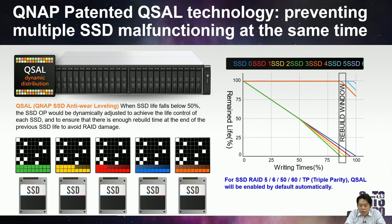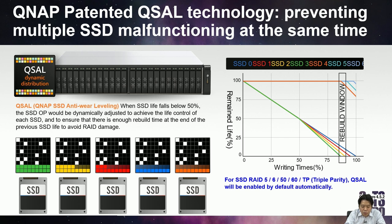The second important feature in this release is Q-SAL. QSAL stands for QNAP SSD Anti-wearing Leveling — it's our patented technology. The SSD has a lifetime limitation, and users worry whether all SSDs in a RAID will fail at the same time because workload is evenly distributed. With our new Q-SAL algorithm, it can dynamically distribute the over-provision size of each SSD and guarantee every SSD has enough time to rebuild before its lifetime expires.